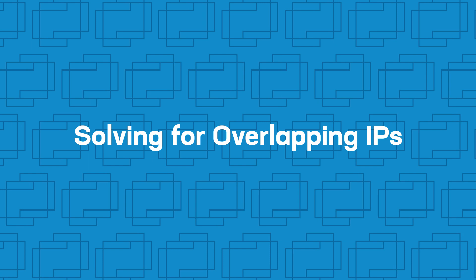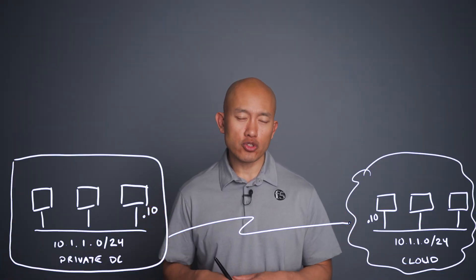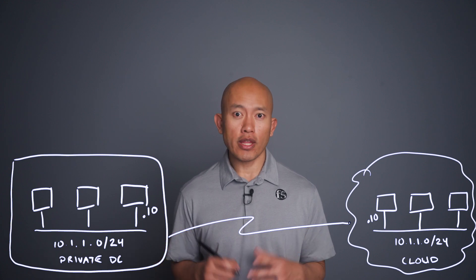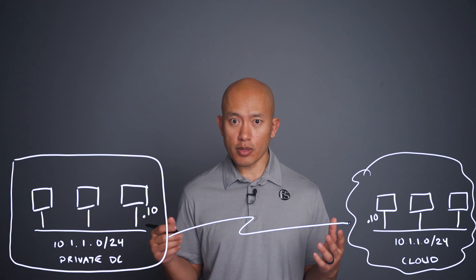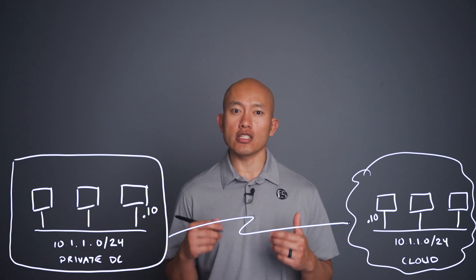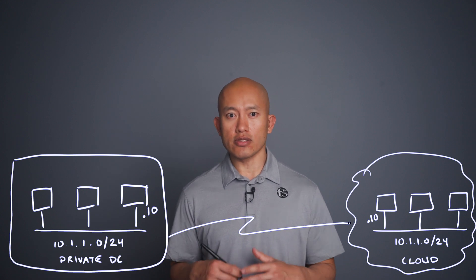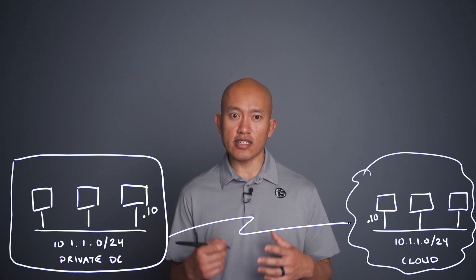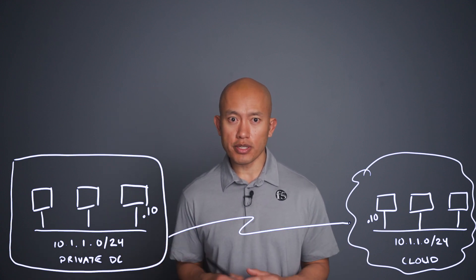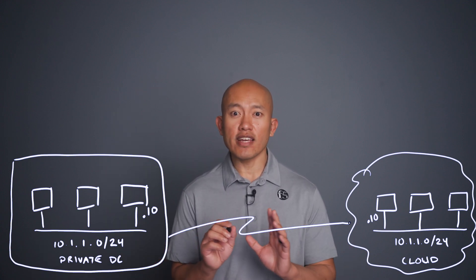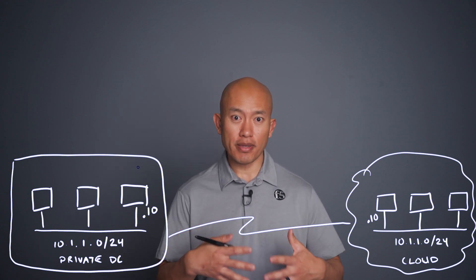So how do we go about fixing this? The first approach sounds straightforward: you could simply change the IP addressing of the environment being integrated. However, in reality these environments get quite large, which would make the change very time consuming and very complicated. There can be a lot of interdependencies that need to be discovered and understood. IP addresses could be hard coded in all sorts of places, and there are often interdependencies that are missed until you actually attempt to make that change.